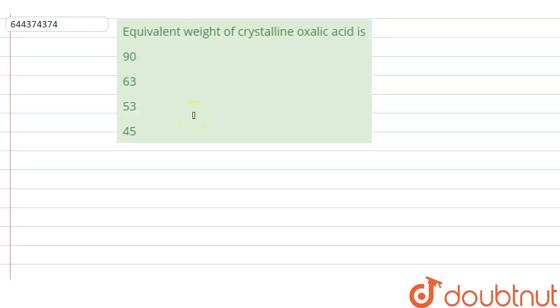Hello everyone, let us solve this question. The question says that equivalent weight of crystalline oxalic acid is: option A 90, option B 63, option C 53, and option D 45.